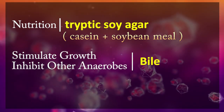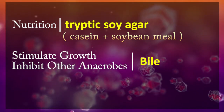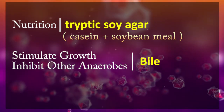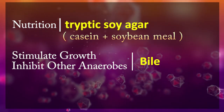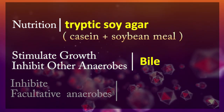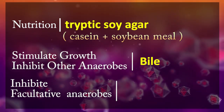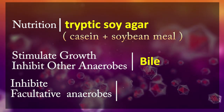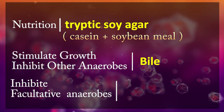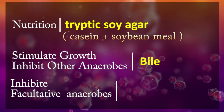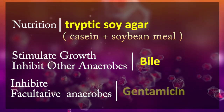20% bile is added to stimulate the growth of the Bacteroides fragilis group while inhibiting other anaerobes. Facultative anaerobes, which are also abundant in feces, compete with obligate anaerobes when grown anaerobically.